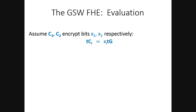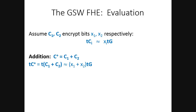For homomorphic evaluation, I'll show how to take two ciphertexts encrypting bits x1 and x2 and operate on them to get a ciphertext encrypting x1+x2 and x1·x2 — which lets you evaluate any circuit. Addition is really easy: just add the ciphertexts. You can see that t times the new ciphertext is just (x1+x2)·t·G, so you get an encryption of x1+x2.